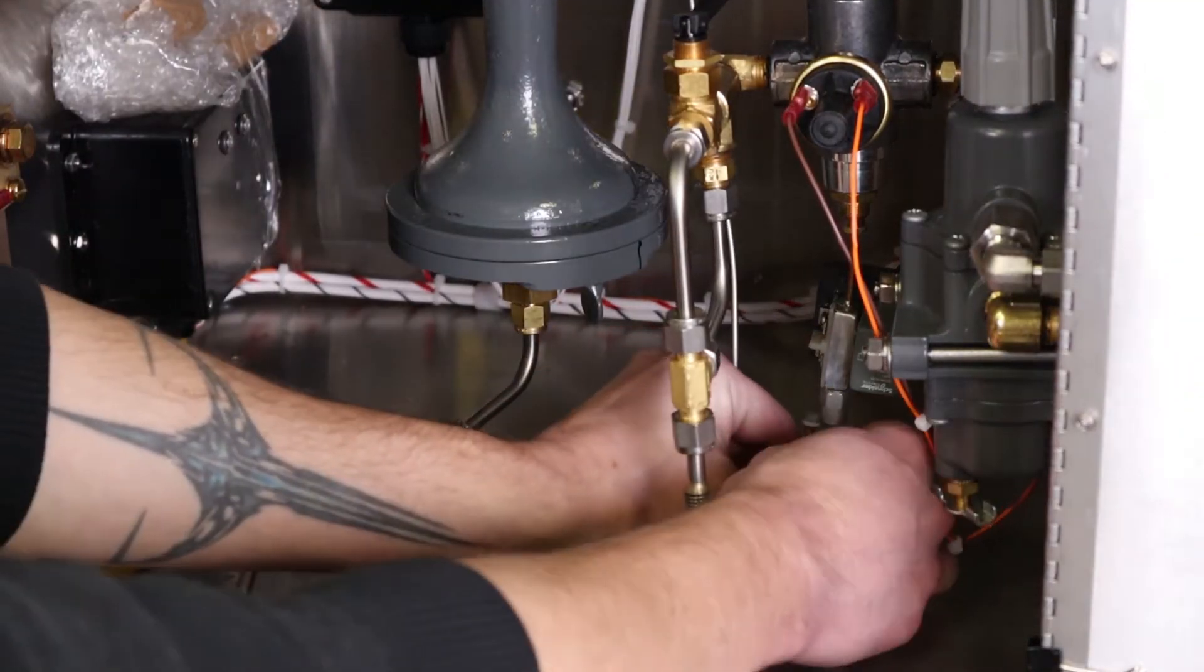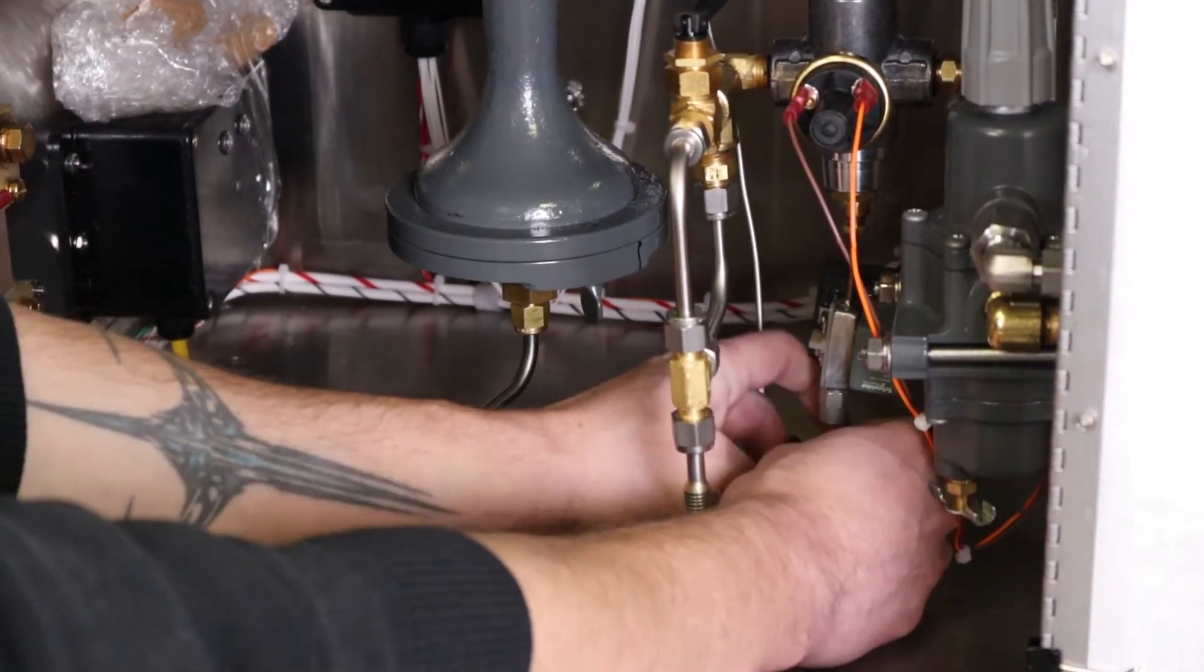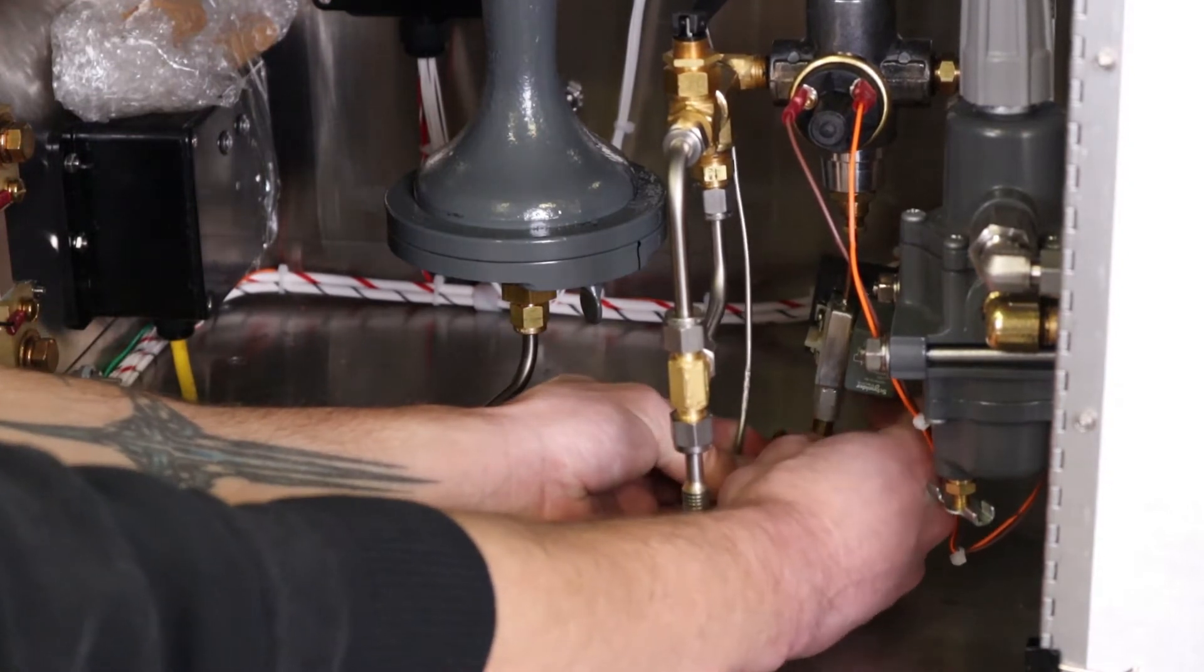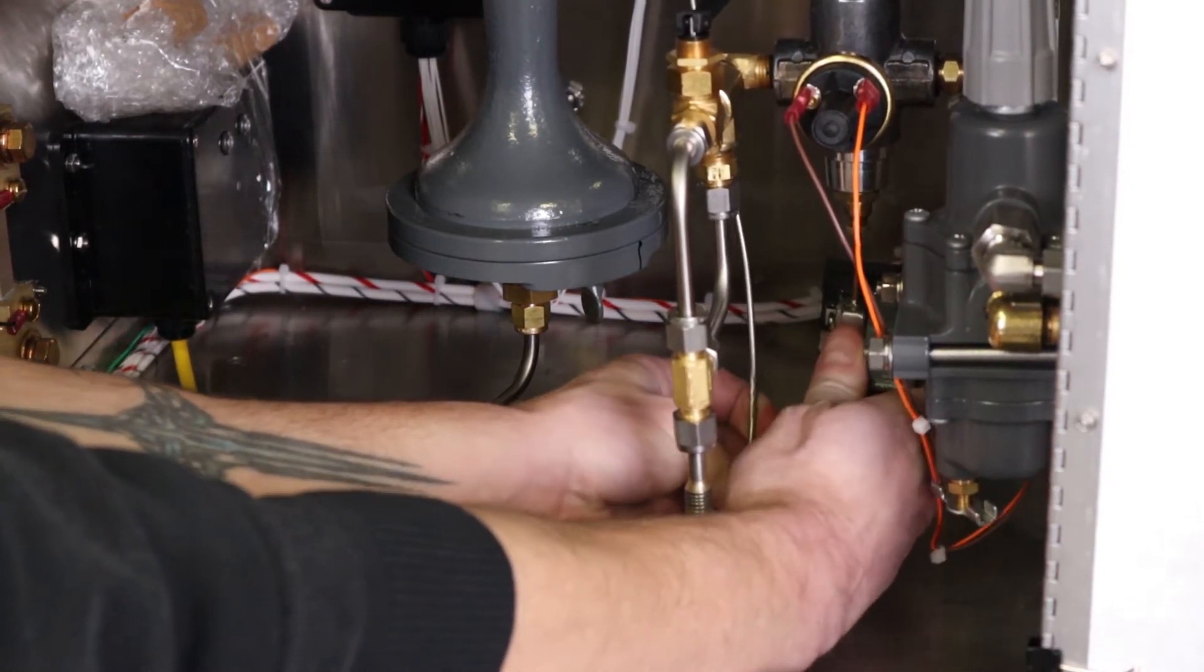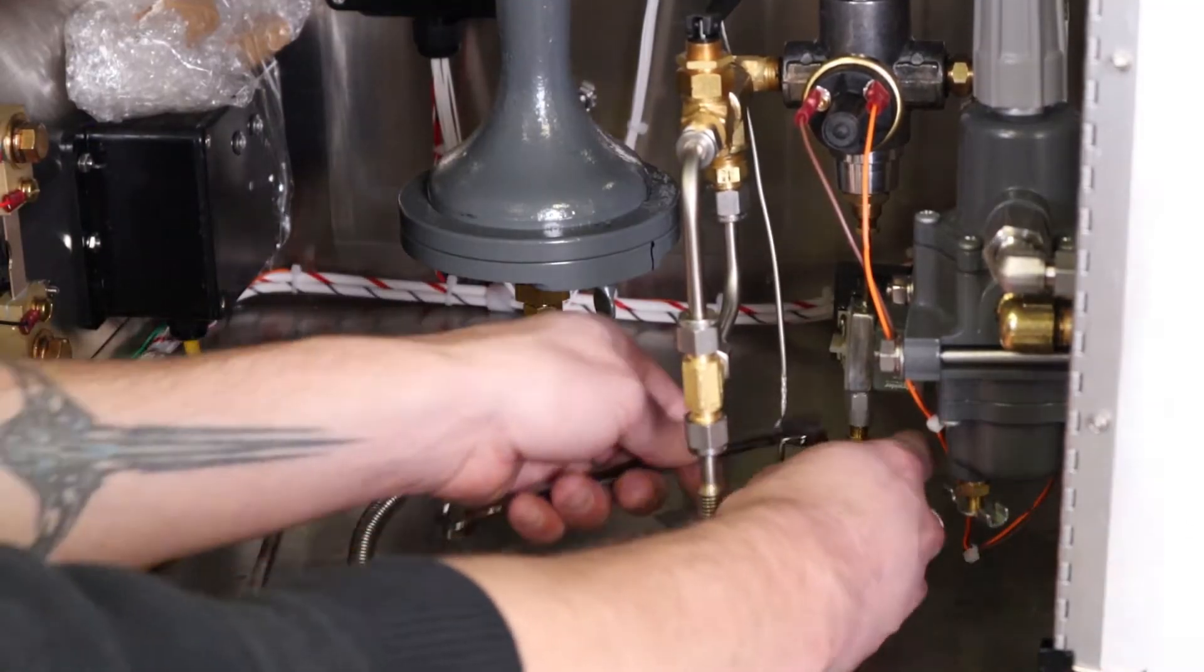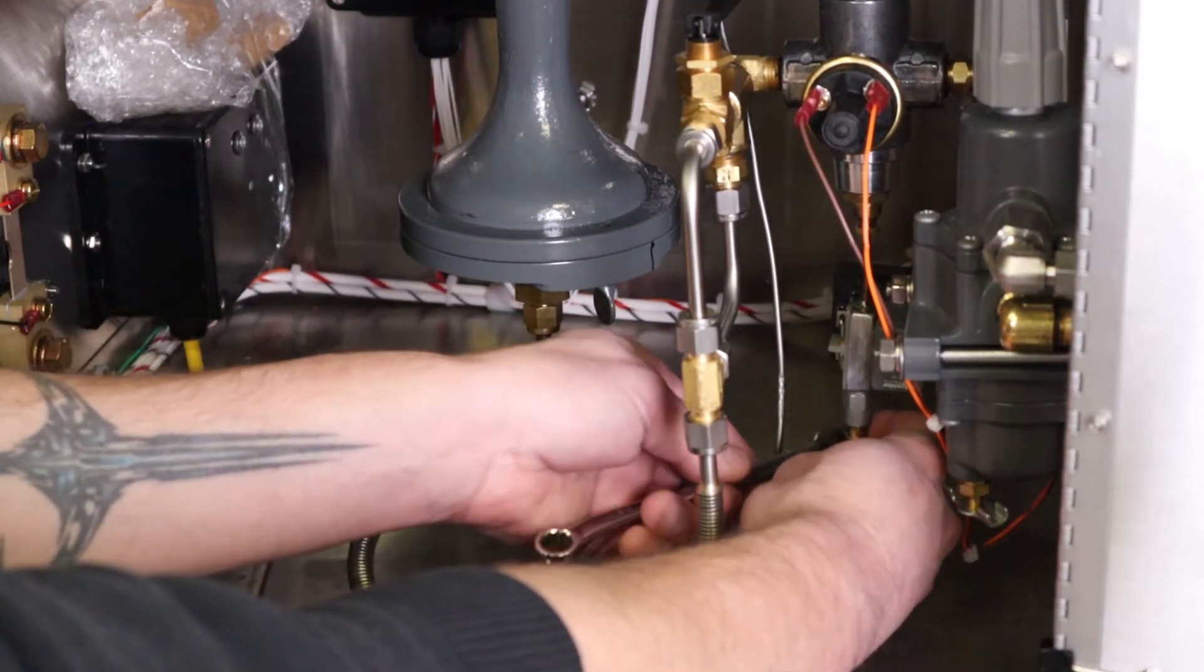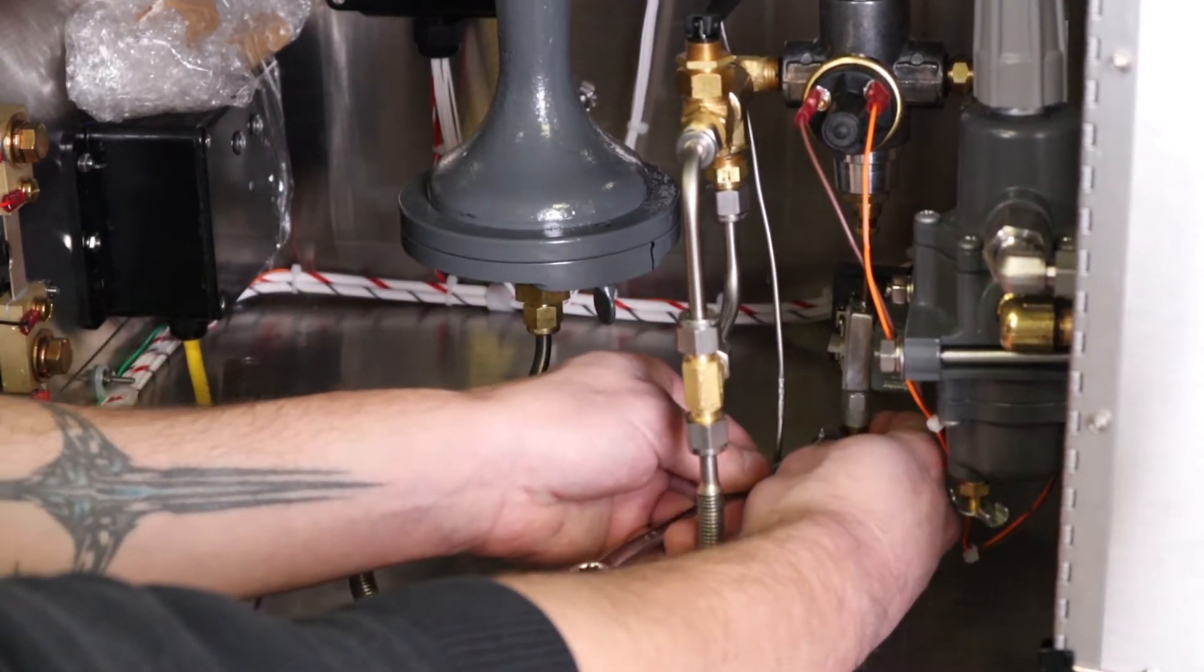Then we'll take the thermocouple and put it into the other end of the relay assembly. Using a 3/8 wrench again, tighten the fitting into the bottom of the assembly.